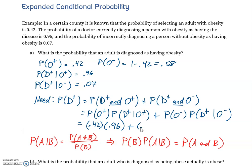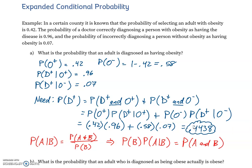The probability of not being obese is 0.58, and the probability of being diagnosed as obese given not being obese is 0.07 — small but non-zero. Putting it all together: (0.42 × 0.96) + (0.58 × 0.07) = 0.4438, or 44.38%. This is the probability that an adult is diagnosed as having obesity, whether or not they actually are obese — which is why we had to consider both scenarios.